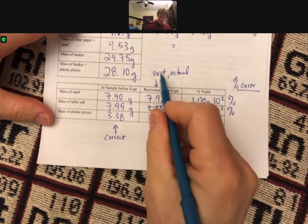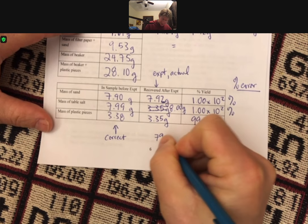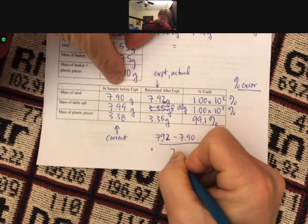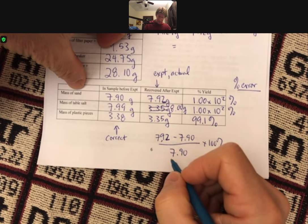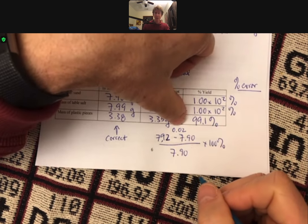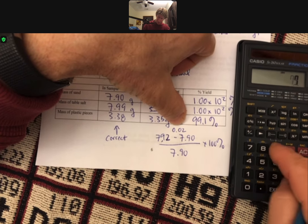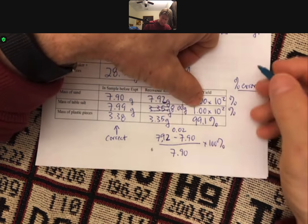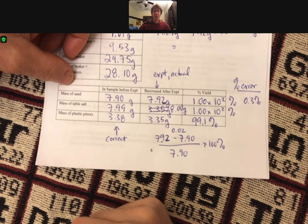Percent error is going to be experiment or actual minus correct divided by correct. So 7.92 minus 7.90 times 100%. This is going to be the sand percent error. And when we see this here, we will get 0.02, which only has one sig fig. So our answer will only have one sig fig. 0.02 divided by 7.90 times 100. And we get 0.3% percent error in the sand. And that makes sense because it was 100.3% before.